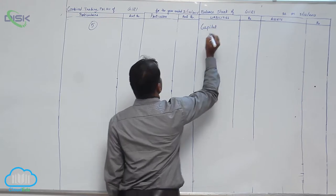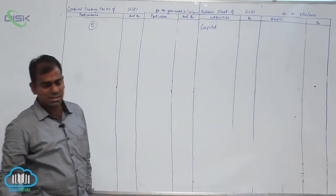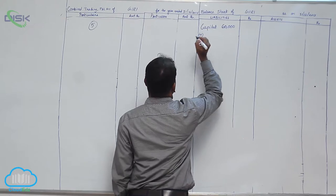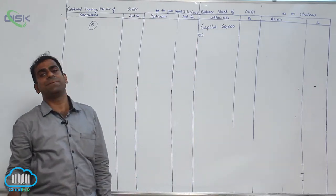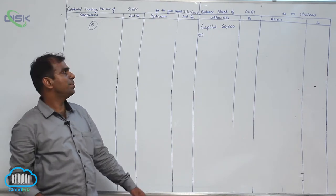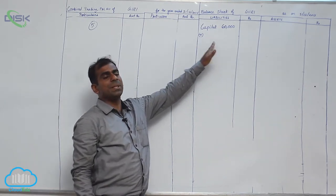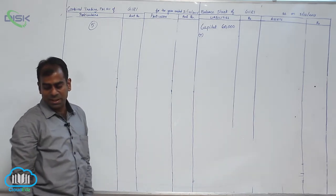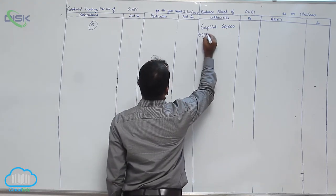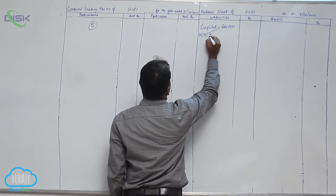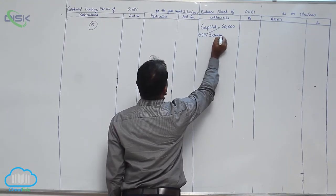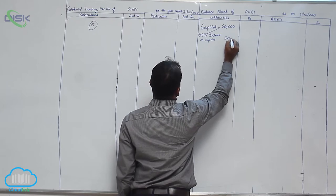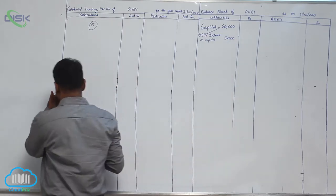Referring to the table of adjustments we discussed: if interest on capital is given in the adjustment, it should be added to capital and taken on the P&L account debit side. The percentage of interest on capital is 9%, so 9% of sixty thousand gives five thousand four hundred. So we add interest on capital of five thousand four hundred, and this five thousand four hundred is also shown in the P&L account.